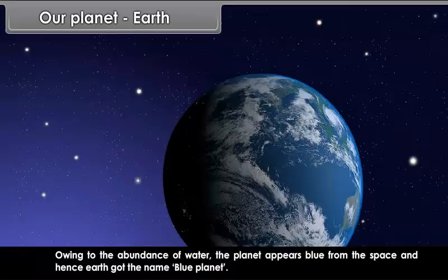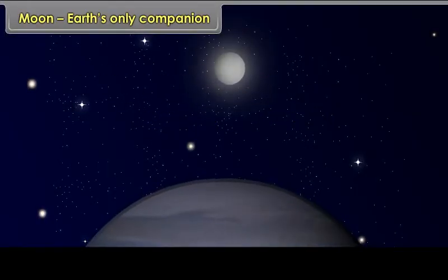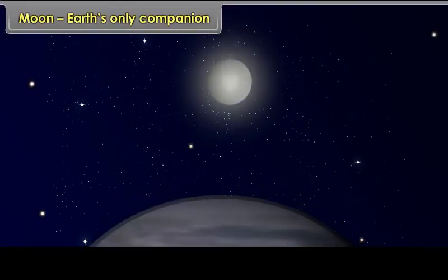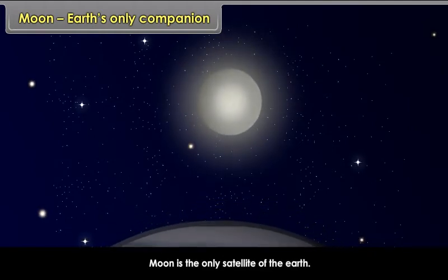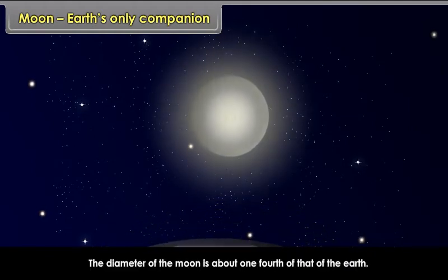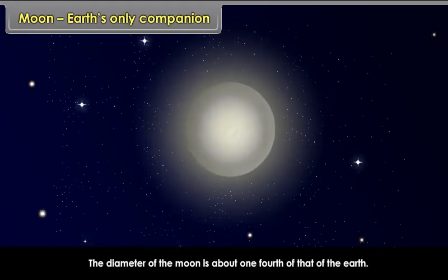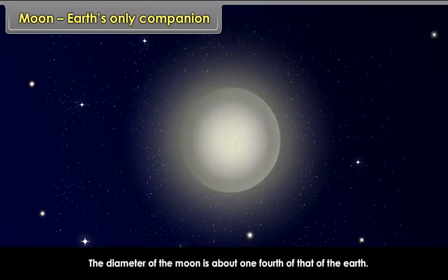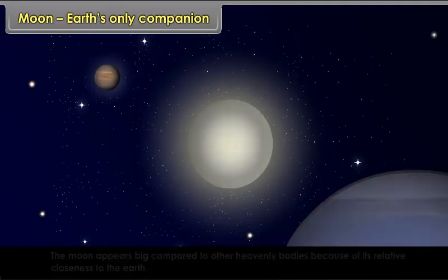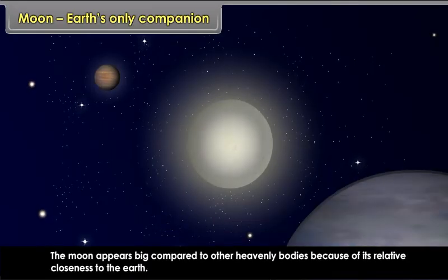Moon, Earth's only companion. Moon is the only satellite of the Earth. The diameter of the Moon is about one-fourth of that of the Earth. The Moon appears big compared to other heavenly bodies because of its relative closeness to the Earth.